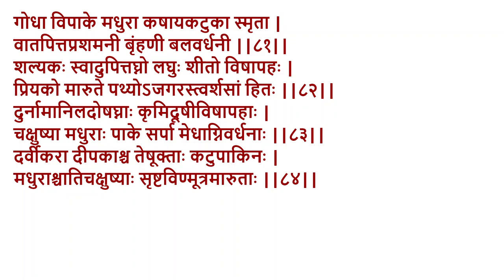Shalyaka is another animal difficult to equate to current species. Its properties: swadhubhitagni, laghu, shita, vishapaha. Priyako, mavarte, prachya. Ajagaraha is a crocodile — even crocodile meat was used.